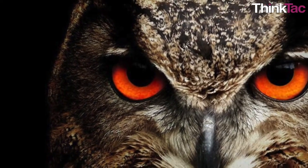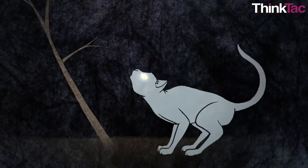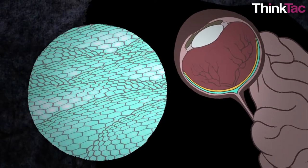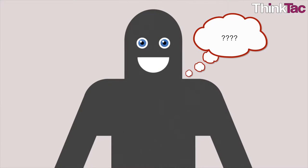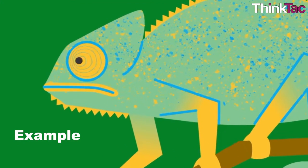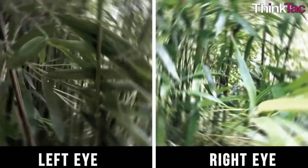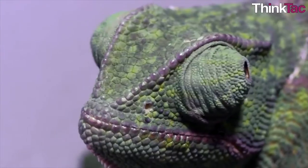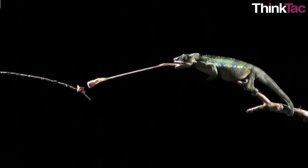Animals with binocular vision use their ability of improved depth perception for grabbing objects effectively, which is why most predators have binocular vision with eyes in front of their heads. This is not a rule, however, as it is difficult to find rules without exceptions in this diverse biological world. For example, chameleons have eyes placed on the sides of their head and their eyes are capable of moving completely independently from one another. However, chameleons can also focus both eyes in front of them at a single point, which is very useful when hunting.